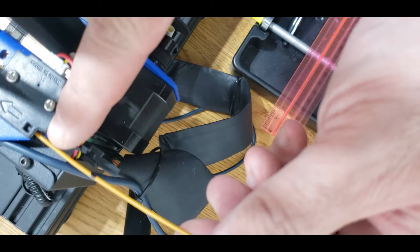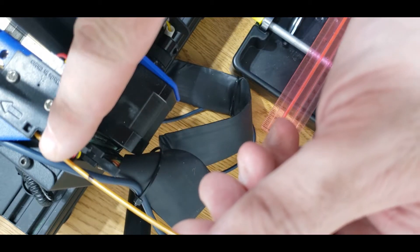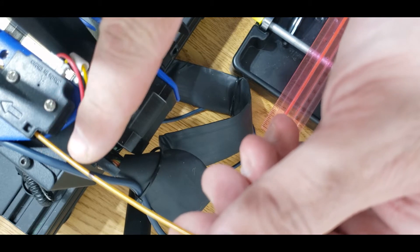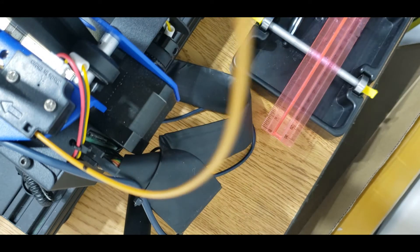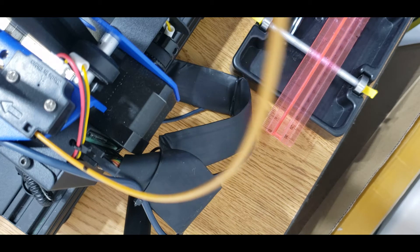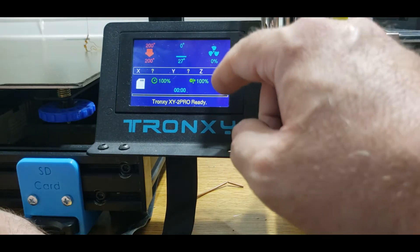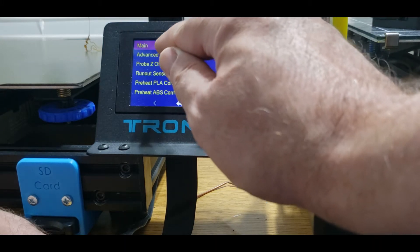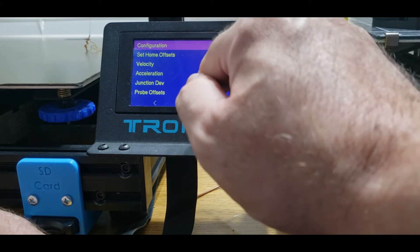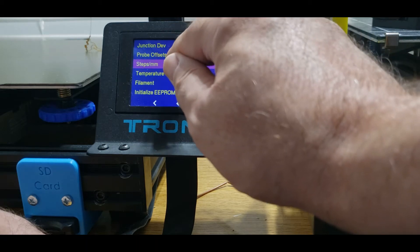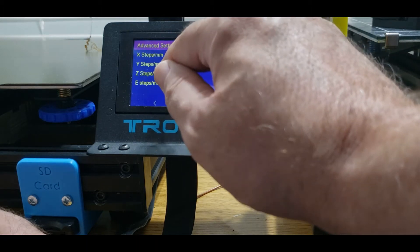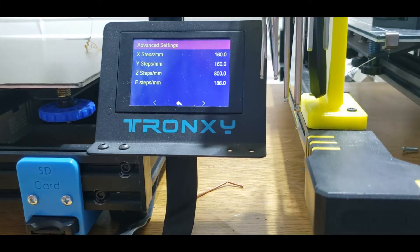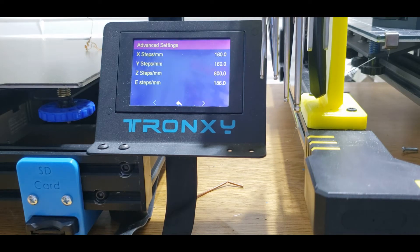Now I'm going to find out how much my steps are. I'm going to go into Configuration, Advanced Settings, and you're going to see Steps Per Mil. My extruder steps are 186.